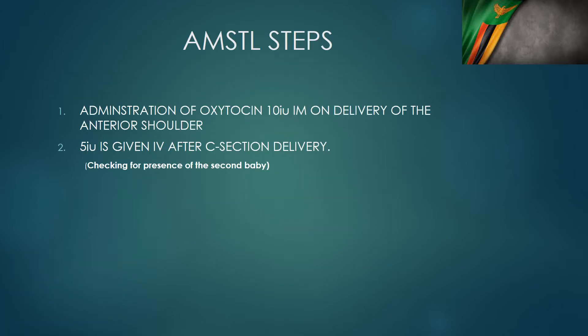What are the steps involved in active management of the third stage of labor? The first step involves administration of a uterotonic agent, which is oxytocin in this case. Oxytocin is ideally administered within one minute of delivery of the baby. Before oxytocin is administered, we have to check that there is no second baby in the uterus after delivery of the first baby.